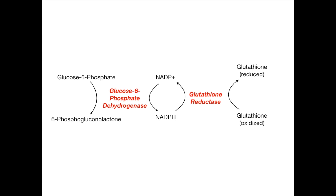To summarize, because this is very high yield: glucose-6-phosphate dehydrogenase takes glucose-6-phosphate—stolen from glycolysis—and converts it to 6-phosphogluconolactone, generating NADPH from NADP+. Then glutathione reductase sees that NADPH and uses it to reduce glutathione. The body needs reduced glutathione to handle free radicals. Glutathione reductase grabs the NADPH generated by the HMP shunt, and one end product is NADP+, which the HMP shunt uses to keep going—a cyclical wheel.